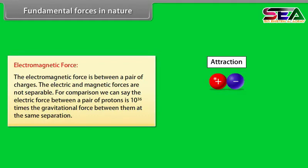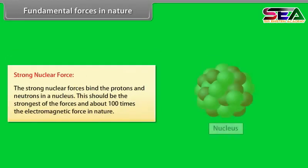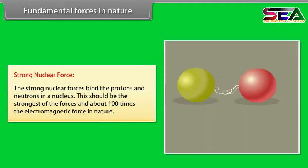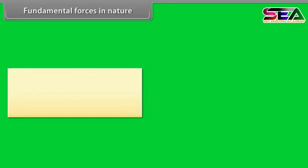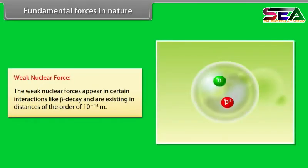The strong nuclear forces bind the protons and neutrons in a nucleus. This should be the strongest of the forces and about 100 times the electromagnetic force in nature. The weak nuclear forces appear in certain interactions like beta decay and are existing in distance of the order of 10 raised to the power minus 15 meter.